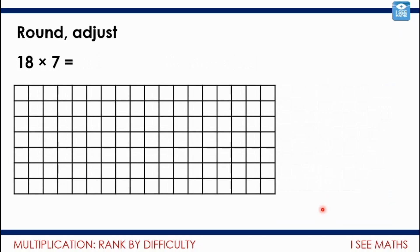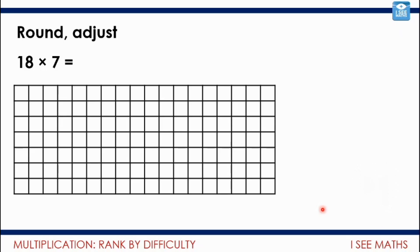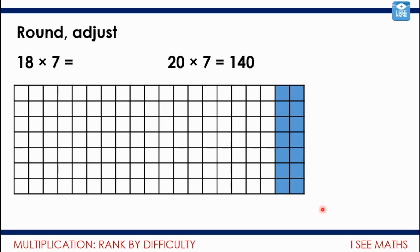So have a think about this one: 18 multiplied by 7. How could I use a round and adjust strategy here? Pause the video and have a think. Okay, let's have a look. The strategy I went for was rounding the 18 up to 20. So I know 20 lots of 7 is 140 — there are 140 squares in total. And I was thinking, well, I'll have to subtract these ones here, these 14. So what will that leave me with? 126. Another little strategy you can put in your toolbox.